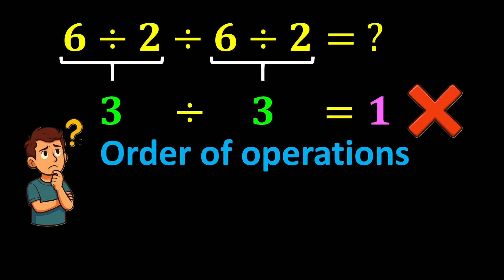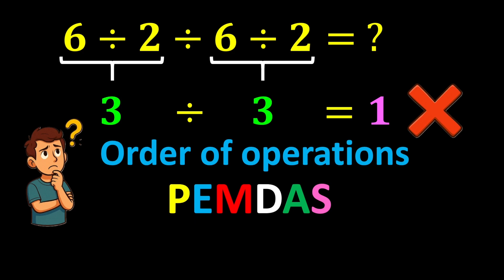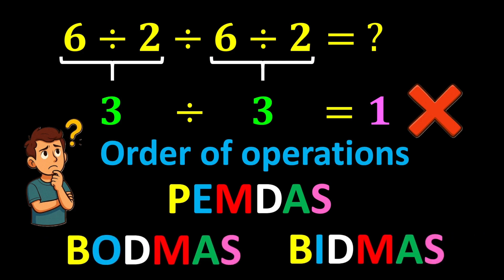The correct order of operations is commonly summarized by a short and well-known acronym called PEMDAS, where each letter represents a specific step in solving a mathematical expression. In some countries, the terms BODMAS or BIDMAS are used instead of PEMDAS.